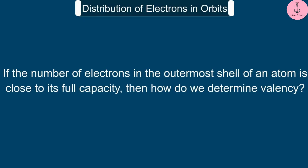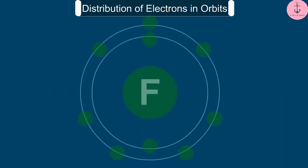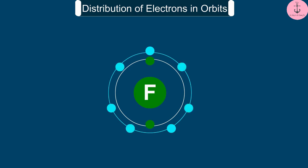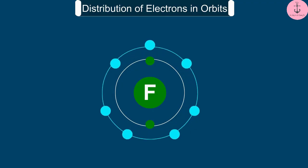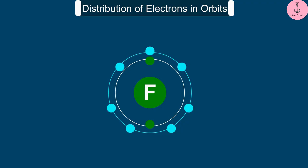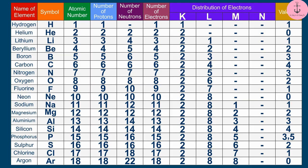But if the number of electrons in the outermost shell of an atom is close to its full capacity, then how do we determine valency? In this case, valency is obtained in another way. Let us try to understand it by an example. For example, the fluorine atom has 7 electrons in the outermost shell and its valency could be 7. But it is easier for fluorine to gain 1 electron instead of losing 7 electrons. Hence, its valency is determined by subtracting 7 electrons from the octet and this gives you a valency of 1 for fluorine. Therefore, we can say that an atom of each element has a definite combining capacity called its valency.